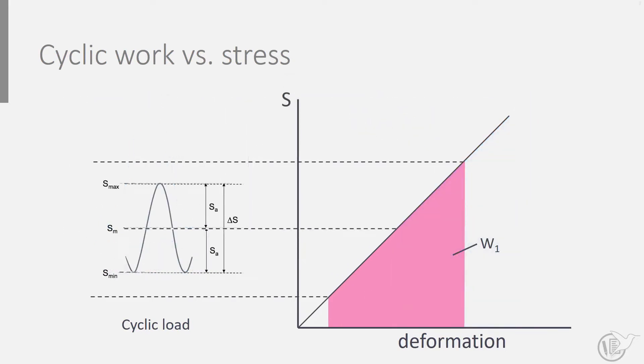Similarly, maintaining the mean stress while reducing the amplitude stress implies reducing the cyclic work applied and hence an increase in fatigue life.